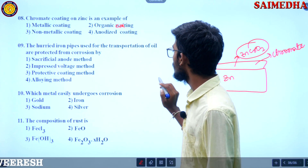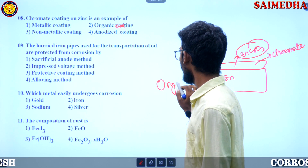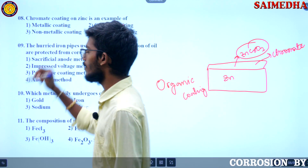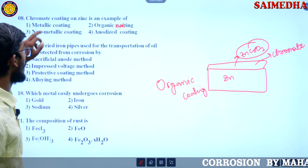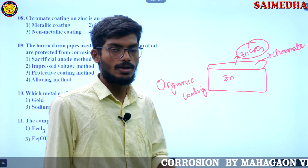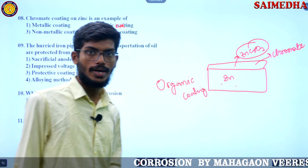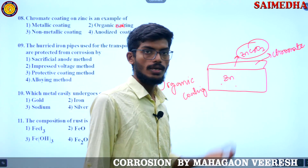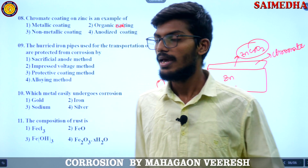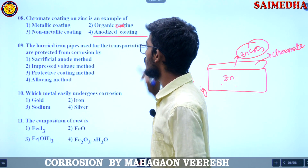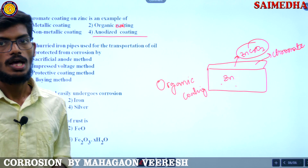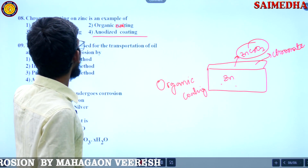It comes under the organic coating. Under metallic coating, we apply another metal directly. In organic coating, we have chromium mixed with the required metal and made as a coating on top. Under non-metallic coating, it is completely different. Under anodized coating, we undergo some electrolysis process.